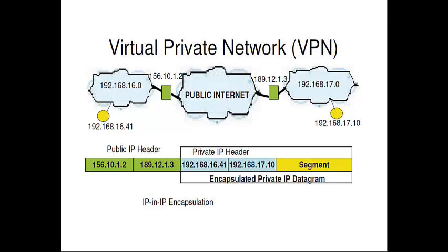The idea of using IP-in-IP encapsulation provides the concept of a Virtual Private Network, or VPN. If you have two sites that operate with private IP address space, geographically separated, with the public internet in between, you can still make them appear to be one single network by using this VPN concept, which involves IP-in-IP encapsulation.